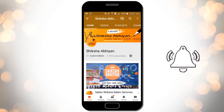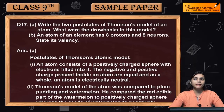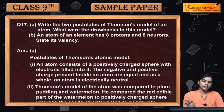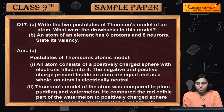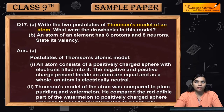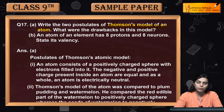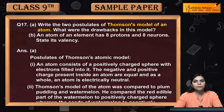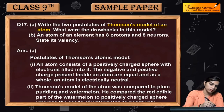Hello students, our next question is question number 17. The first part is: write the two postulates of Thomson's model of an atom. We have studied different models when we saw atomic structure. Now we have to discuss Thomson's model, its two postulates, and what were the drawbacks — the limitations — because that model has failed.